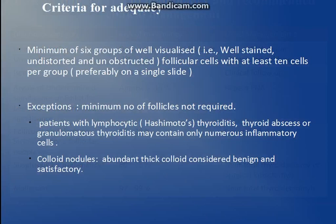What is the criteria for adequacy? In the first category we understood that it is inadequate or non-diagnostic, so we must know what the adequate criteria is. Adequate criteria requires a minimum of 6 groups of follicular cells with 10 cells per group — that is 6 groups times 10 cells. These cells should be well-stained, undistorted, and unobstructed.